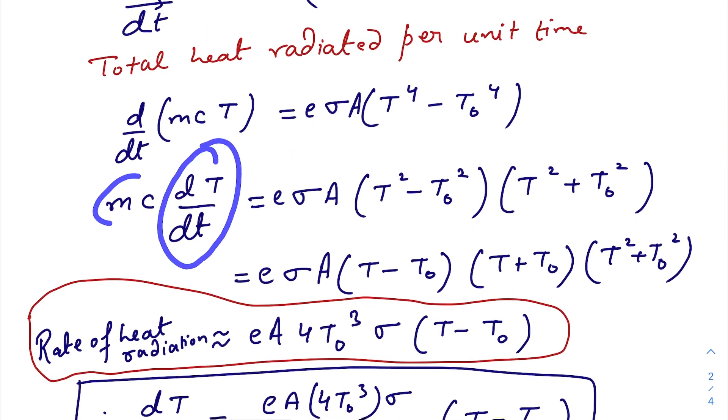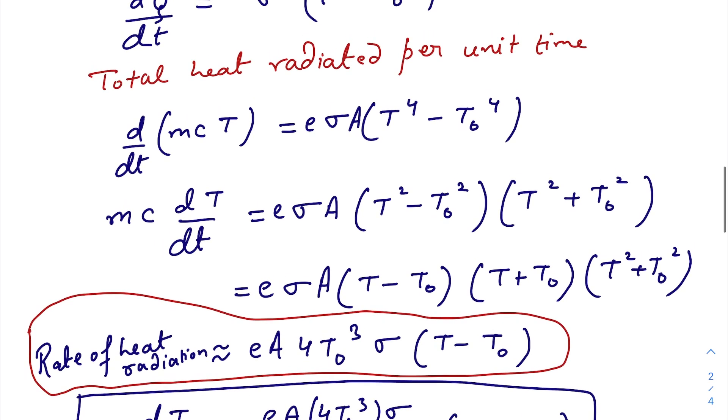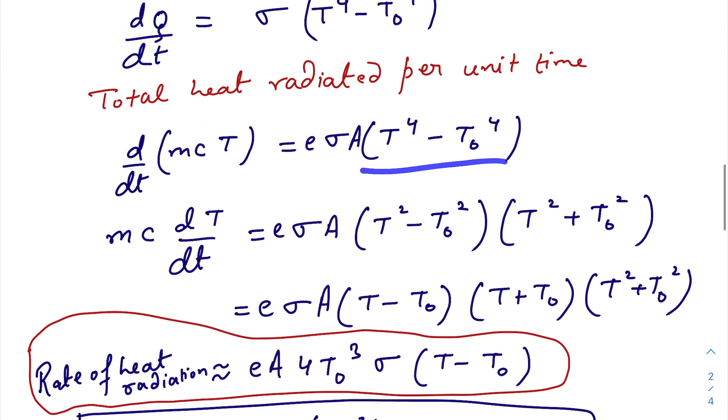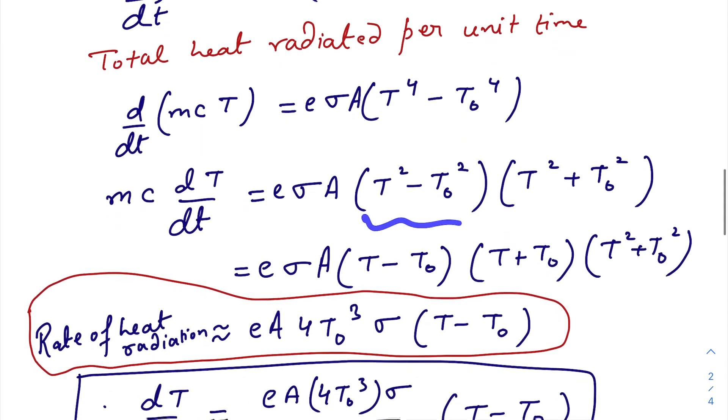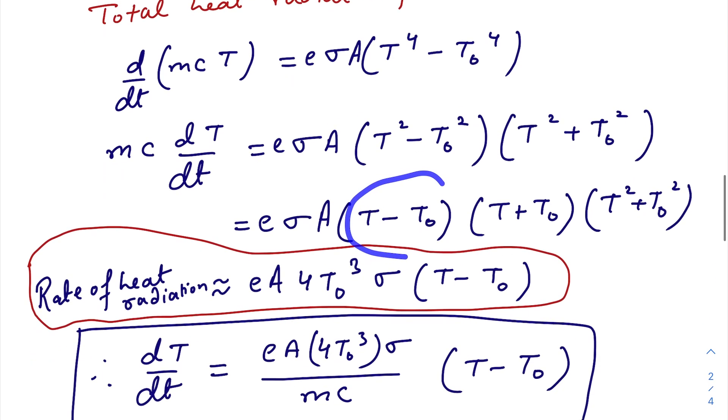M C dT divided by time equals to E sigma A, just expand it, T to the power 4, T square minus T0 square, T square plus T0 square. Factorizing it again, T minus T0, T plus T0.